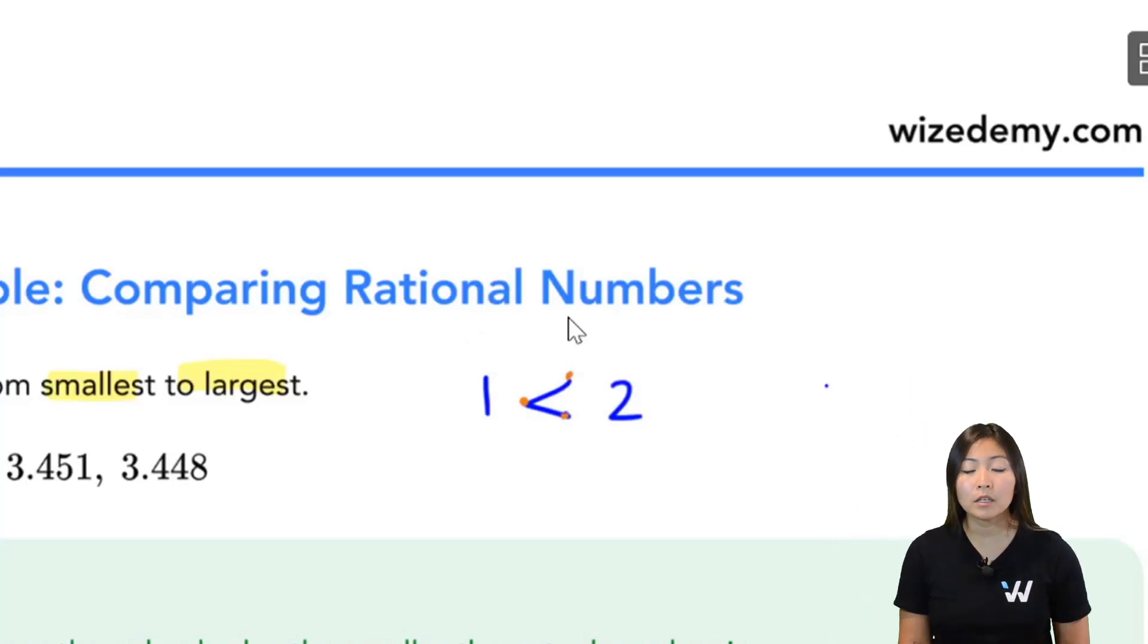Then we also have the greater than sign. So for example, four is greater than three. How do I know that? Again, look for your pointy end. Your pointy end points towards the smaller number, the bigger end points at the larger number.